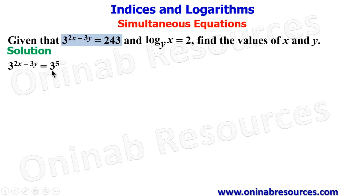So the bases now are in base 3. Therefore, the indices will now be equal. So we'll have 2x minus 3y equals 5. So we've equated the indices. We call that equation 1.